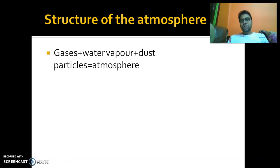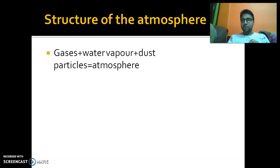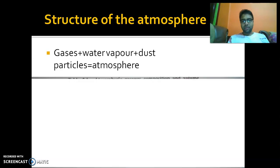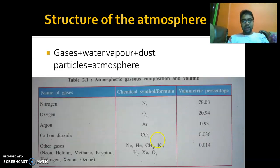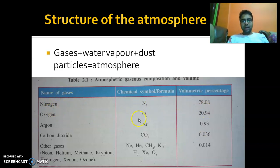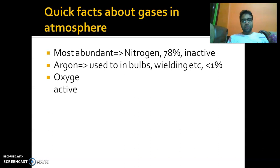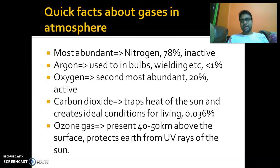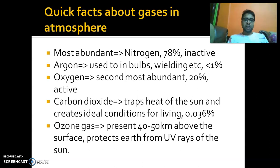Looking at the structure of the atmosphere, in simple terms atmosphere is composed of gases, water vapor, and dust particles. From the table in your book, it is clear that nitrogen is the most abundant gas in the atmosphere. 78% of our atmosphere's gas composition is made up of nitrogen.